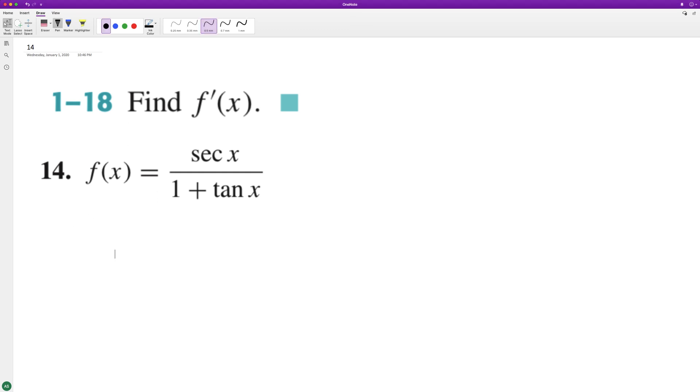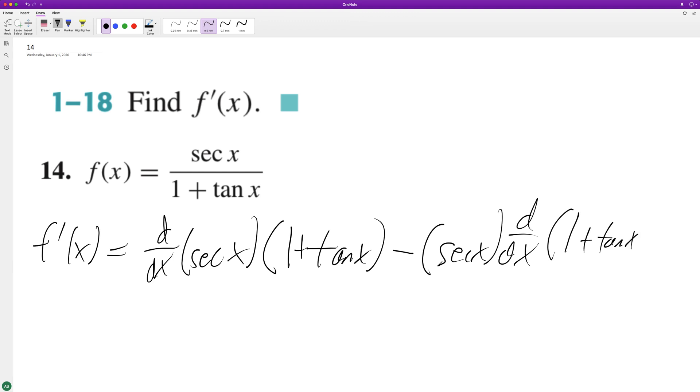We're going to use the quotient rule. That means f prime of x is going to be equal to the derivative of the numerator secant x times the denominator minus secant x times the derivative of the denominator all over the denominator squared.